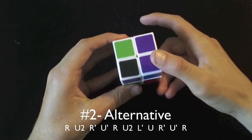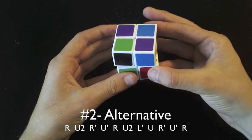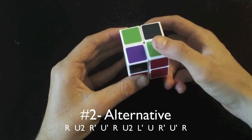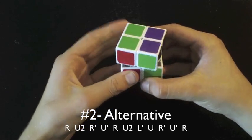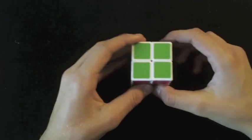R, U2, R prime, U prime, R, U2, L prime, U, R prime, U prime, R, and as you can see, it's finished the cube.